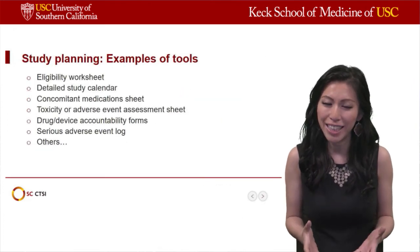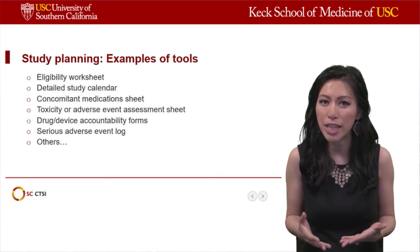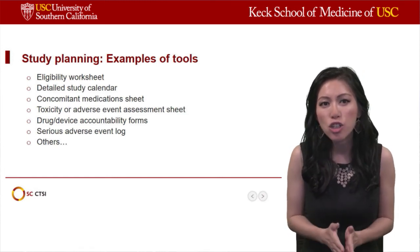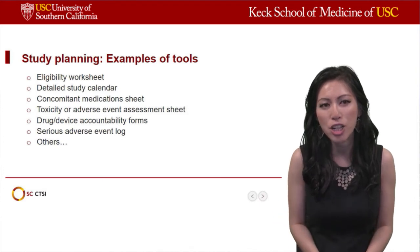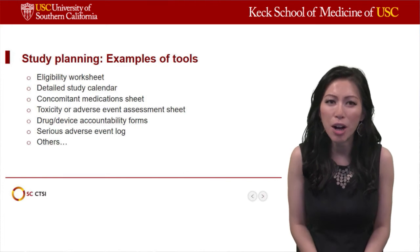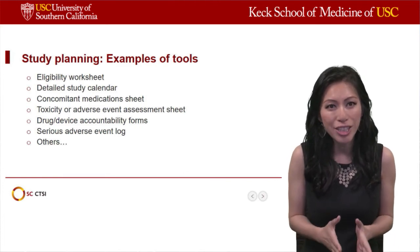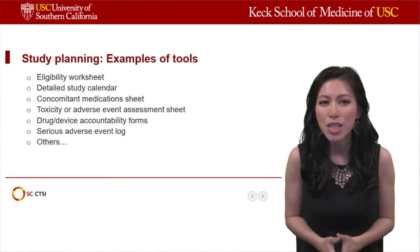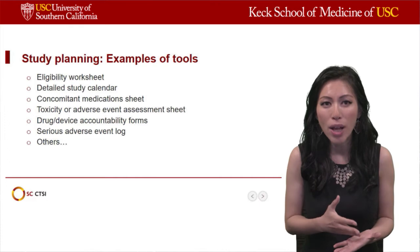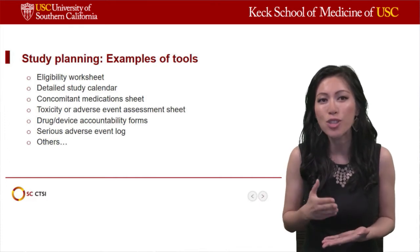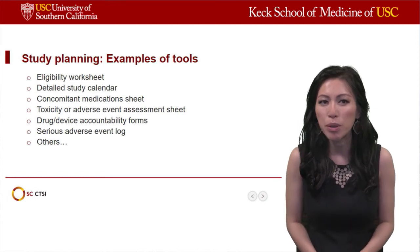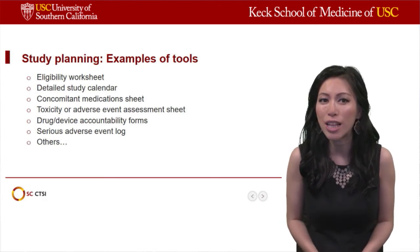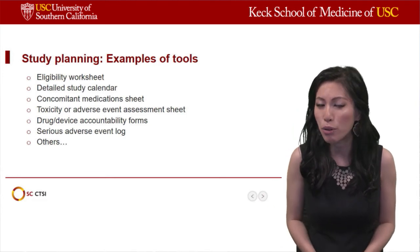When we think about study planning, in addition to the protocol, there are a few other tools to include — documents that help you organize your study and ensure it's carried out in a methodical fashion. For example, an eligibility worksheet is very helpful to make sure the patients you enroll fulfill the inclusion and exclusion criteria. You want to have a detailed study calendar so that your patients as well as your study staff will know exactly when a subject is supposed to come for a visit and when certain procedures are done. You may also want to consider a concomitant medication sheet.